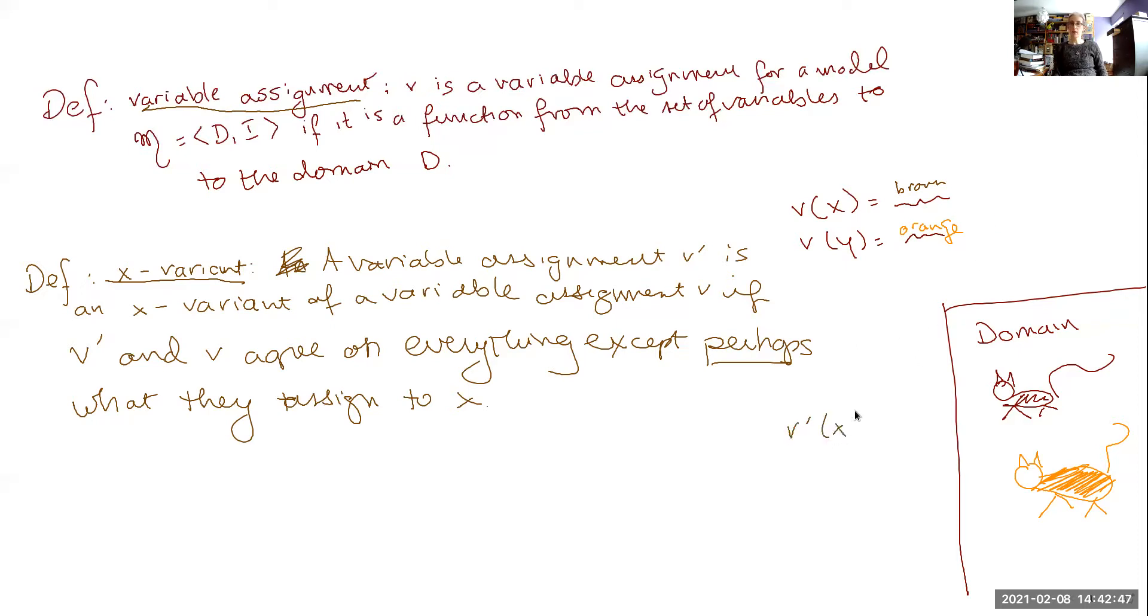If we have a variable assignment, v prime, that takes x to the brown cat, and y to the orange cat, v and v prime are x variants of each other, even though they are the same, because they agree on everything, except possibly, except perhaps x. And in this case, they also agree on x.